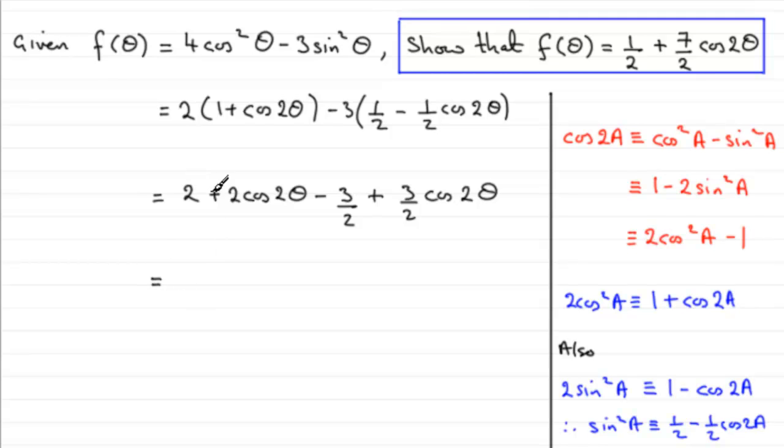And if we group together our terms now, we've got 2 minus 1 and 1 half is going to be 1 half, and 2 cos 2 theta plus 3 over 2 cos 2 theta is going to be 7 over 2 cos 2 theta. And that's what we had to show. So I hope that's given you an idea on that one.